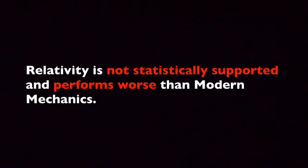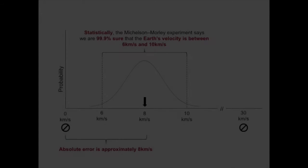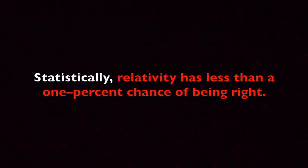I'll begin with statistics. When the experiment is viewed through a statistical lens, we conclude with 99% certainty that 30 kilometers per second is not the Earth's velocity. But notice, we also conclude with 99% certainty that zero is not the Earth's velocity either. So, if we accept the experiment's result, there is less than a 1% chance that classical mechanics or relativity are right.